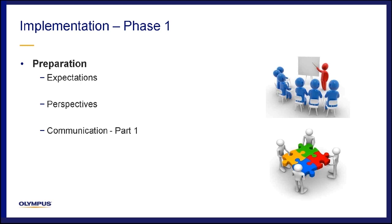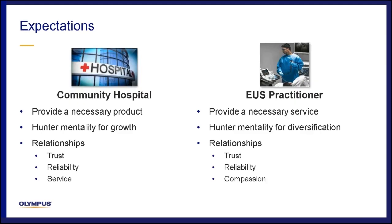Once the idea of EOS has been planted, the first phase of implementation is preparation, which involves managing expectations of key players, both clinical and administrative, understanding their perspectives, and learning to communicate in a common language to highlight the downstream benefits of EOS. Expectations of your community hospital and associated decision makers closely parallels that of the EOS practitioner. Your community hospital's goal is to provide a necessary product to its patients, while the EOS practitioner seeks to provide a necessary service, and both share a hunter mentality for growth, built upon strong relationships of trust, reliability, and service.